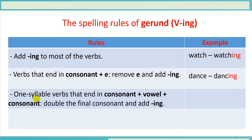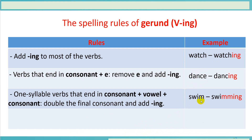Rule number three: one-syllable verbs that end in consonant-vowel-consonant — we double the final consonant and add -ing. For example, the verb swim becomes swimming.